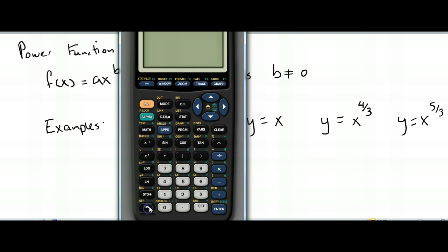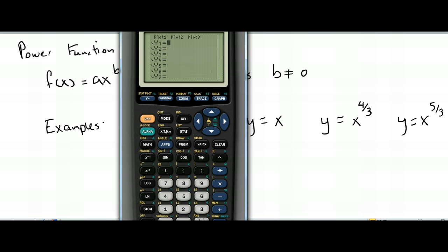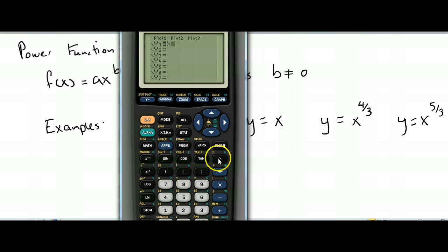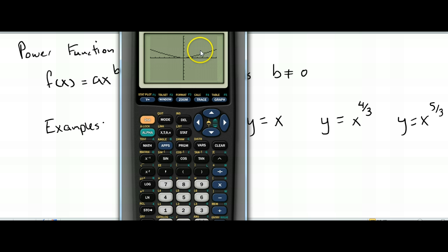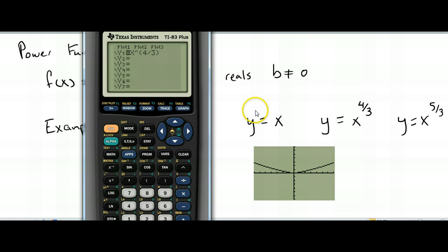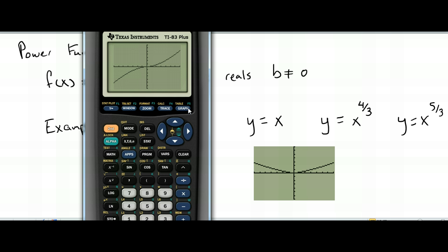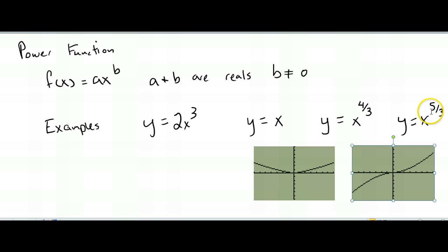I'm going to bring the window down so you can see what's going on. I'll put in y equals x to the four thirds power — remember the caret symbol means 'raised to' — so x, caret, then parentheses four thirds, close parentheses, then hit graph. Here's the graph of y equals x to the four thirds power. Now I'm going to go back in and change that to five thirds, and I want you to notice the difference. Here is the graph of y equals x to the five thirds.